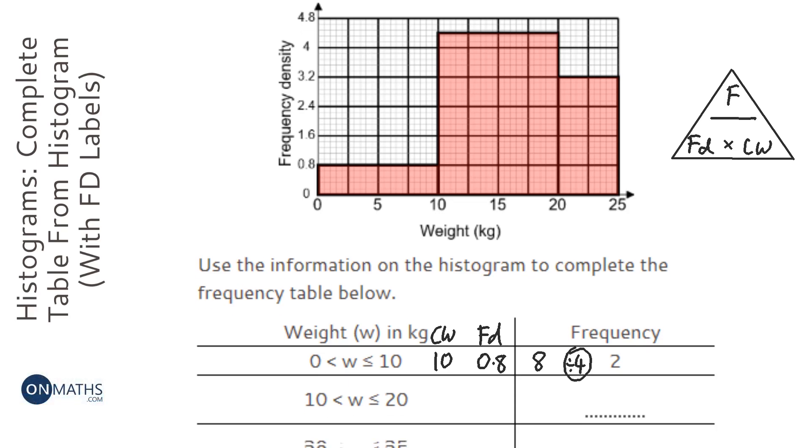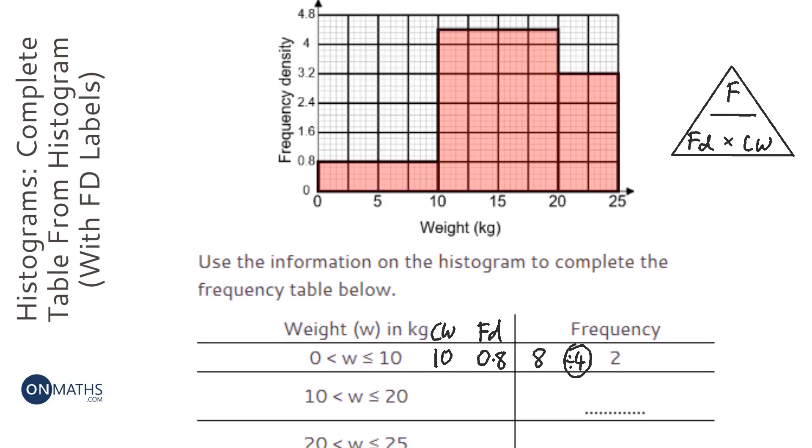I'll always divide each of these by the same number. The class width for the second one is 10, and the frequency density is halfway between 4 and 4.8, so 4.4. So I'm going to do 10 times 4.4, which is 44.